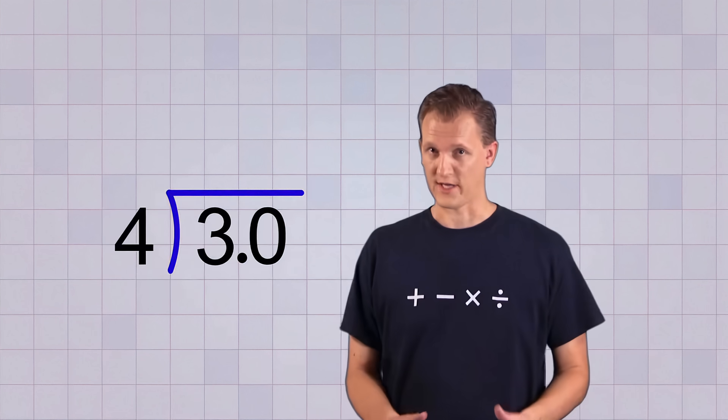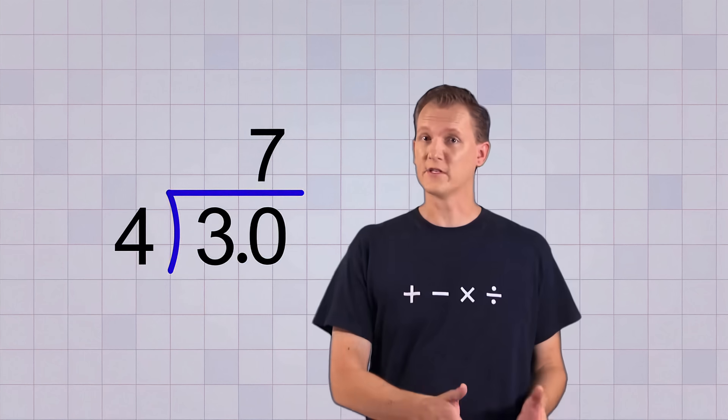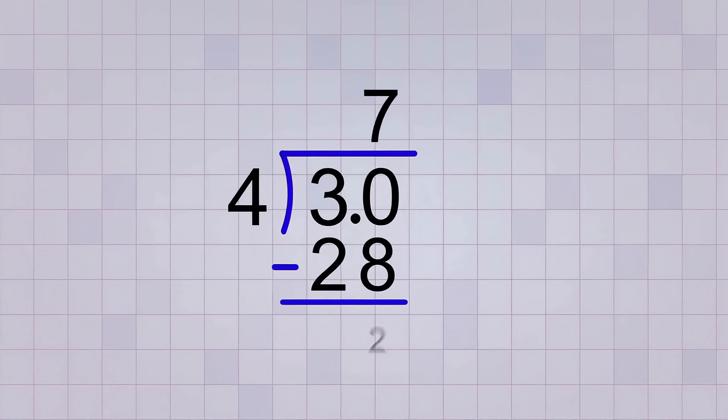Now if you remember your multiplication table, you'll know that 4 goes into 30 7 times, because 7 times 4 is 28. 30 minus 28 leaves a remainder of 2.